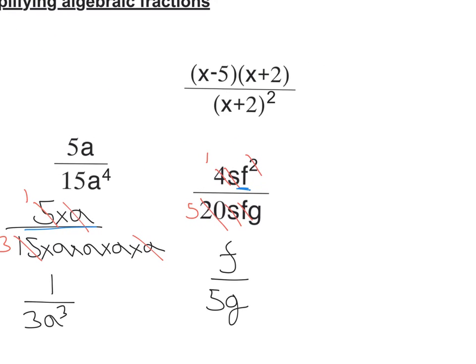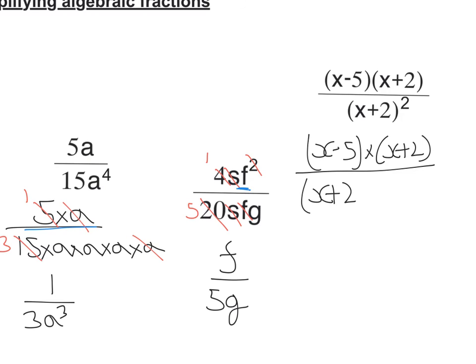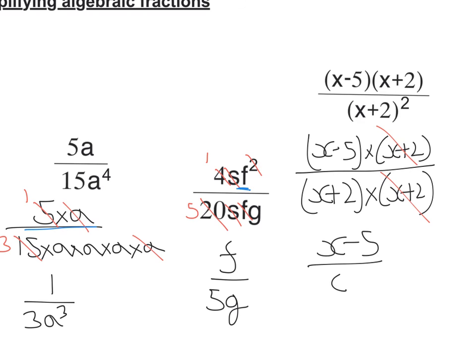Let's look at the last one — this one with brackets. I've got (x minus 5) times (x plus 2) on the top, and on the bottom I've got (x plus 2) times (x plus 2). I can cancel one (x plus 2) on the top and bottom, so I'd be left with (x minus 5) over (x plus 2).